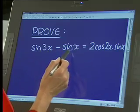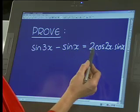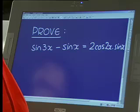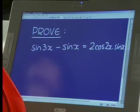Right. You have an identity. Sine 3x minus sine x must be equal to 2 cos 2x times sine x. Is that correct? Yes. Okay.